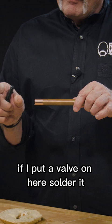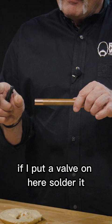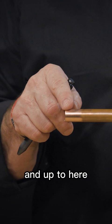So it's going to stop it right here long enough if I put a valve on here, solder it. Now by the time the water gets through that bread and up to here, I've got a valve to turn it off. I can make the rest of my solder joints. Bread, it works amazing.